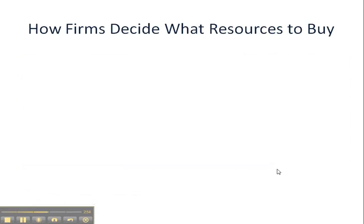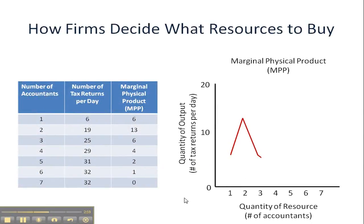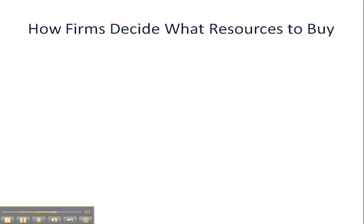We can graph the situation — a graph you should be familiar with, this is a review. The graph of MPP or MP initially rises with that second worker, who is extremely productive. Then with the third worker diminishing returns starts to set in, and so on, until we have this downward sloping curve, which would actually go negative if we were to continue and hire the eighth worker. Hopefully by that point the firm is going to bring in some more capital.